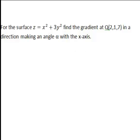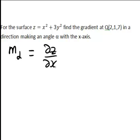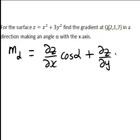For the surface Z equals X squared plus 3Y squared, we want to find the gradient at the point Q with coordinates 2, 1, 7 in a direction making an angle alpha with the X axis. So that means we want to find the directional derivative: M_alpha equals ∂Z/∂X·cos(alpha) plus ∂Z/∂Y·sin(alpha).